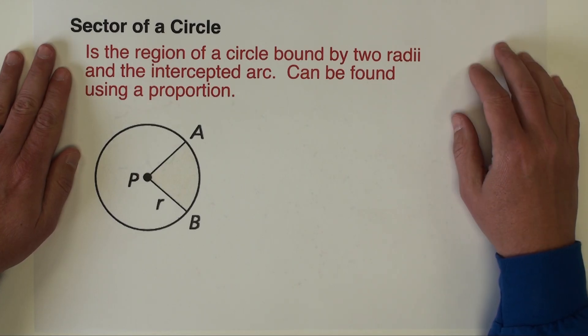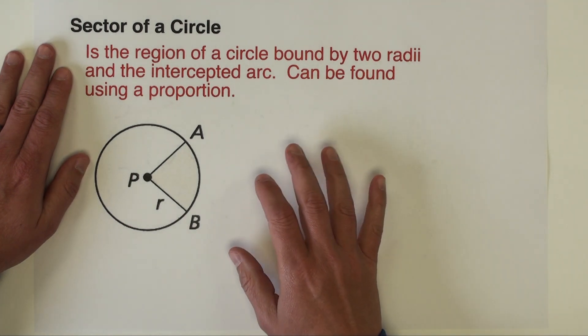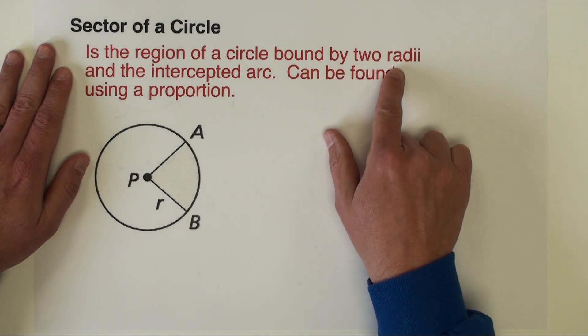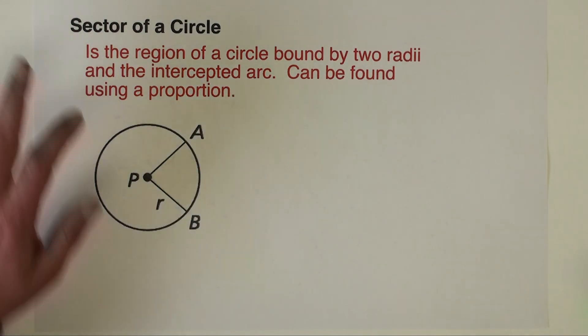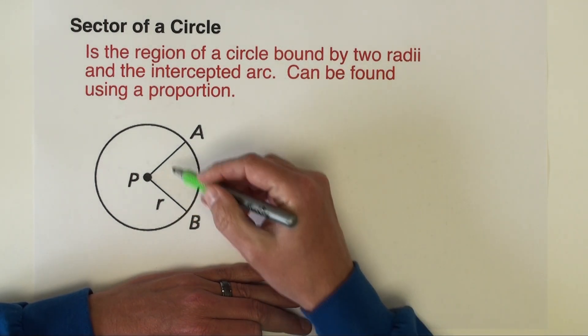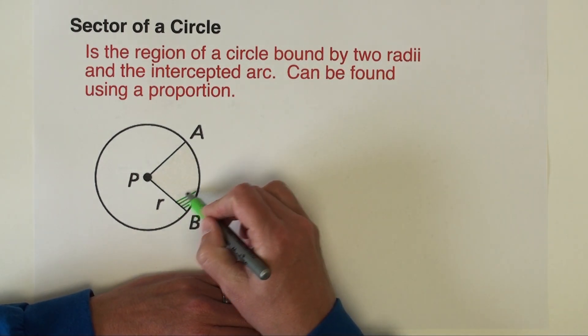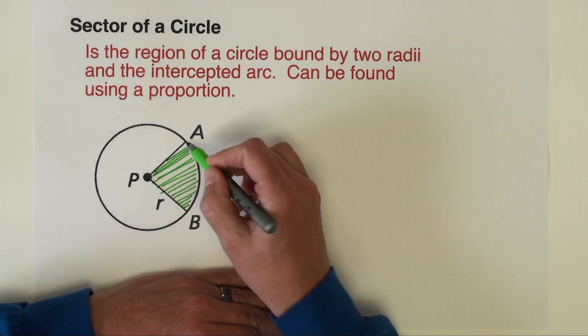The next thing we're going to talk about is the sector of a circle. A sector is just simply a region of a circle that's bounded by two radii and the intercepted arc. So right here you can kind of see it. The shading is not very great, so let me just shade this in. The sector of this circle is right here.